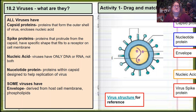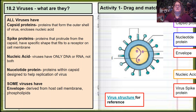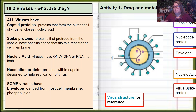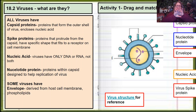Some viruses also have what we call an envelope, which is something we can use to classify viruses. Envelopes are actually membranes, but they're not part of the virus structure itself — they're not virally derived. They're derived from the host cell as the virus leaves. As the viral capsid and spike proteins exit the cell, the virus gets wrapped in part of the host cell membrane.